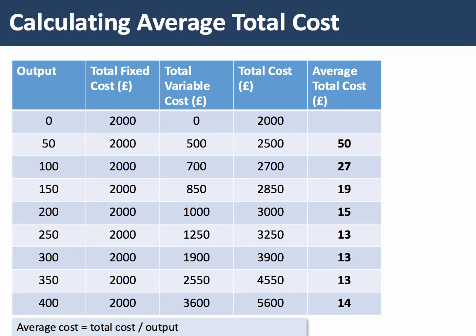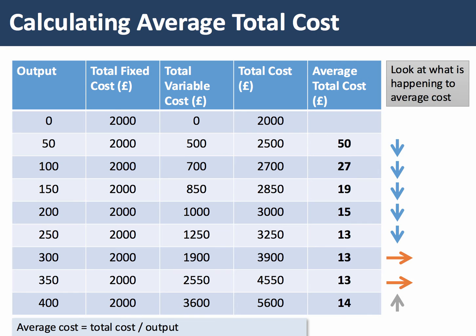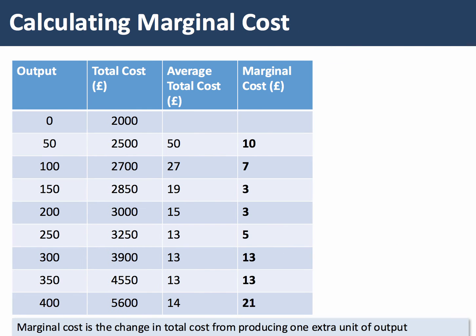The average total cost is total cost divided by output. Notice here how average cost falls quite steeply initially — this is because we're spreading the same fixed cost of two thousand pounds over a bigger range of output. The average fixed cost must always fall as production increases. In our example, average cost is falling steeply from 50 through 27, 19, 15, but the rate at which it's falling is slowing down. There comes a point at output 250 when the average cost is minimized, then it flat-lines and then starts to rise.